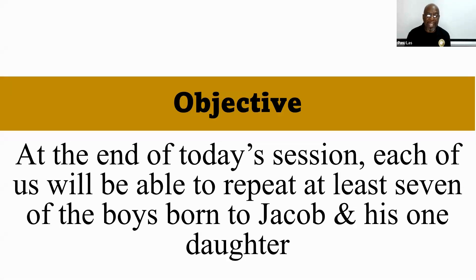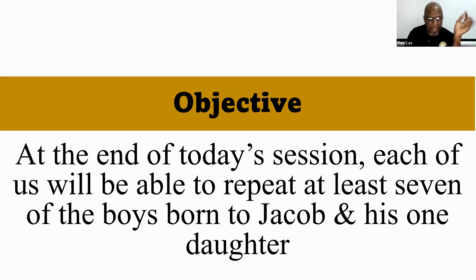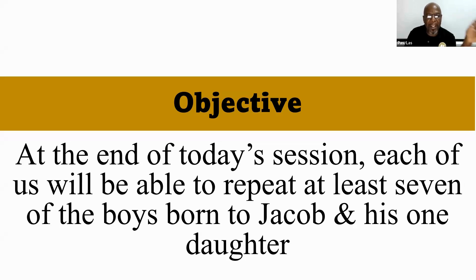The objective for tonight: at the end of today's session, each of us will be able to repeat at least seven of the boys' names born to Jacob, and his one daughter. Everybody must at least know the one daughter's name. But I'm hoping we can repeat at least seven of the boys' names. We have a slide set up that should help us to know every one of the 12 of them. That is the goal tonight — to know the names of every boy, each of the Israelites, and their sister.